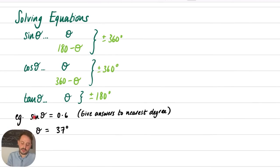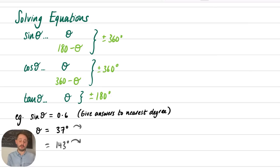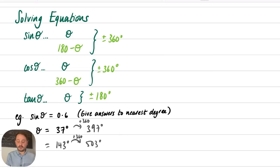For example, solving sin θ = 0.6: the calculator gives 37°, and the second solution is 180° − 37° = 143°. Adding 360° to each gives 397° and 503°. You could also subtract 360° to get solutions in a different range. The starting point is always the calculator value plus the 180-minus version for sine.